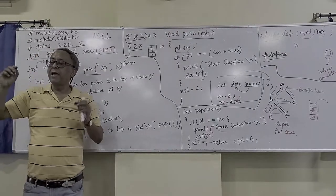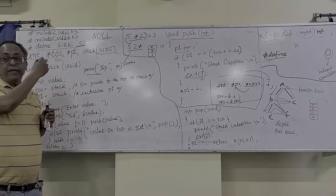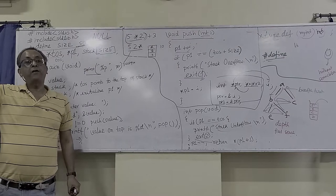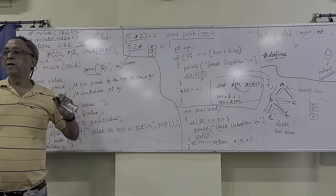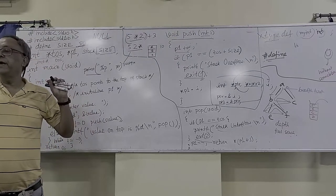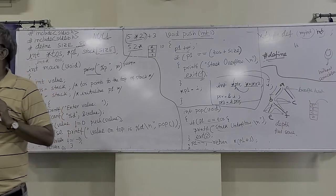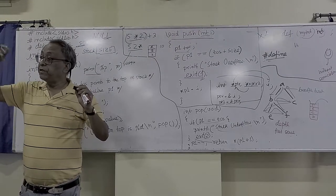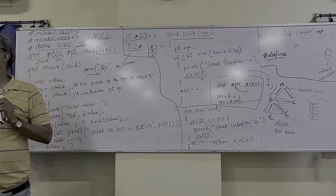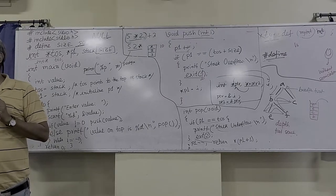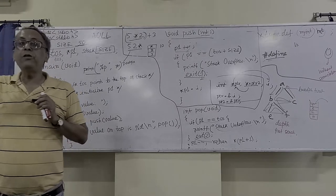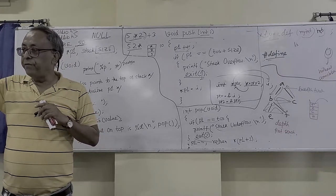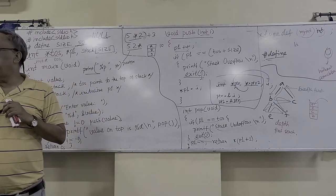There is also a static function — putting static in front of a function means that function can only be used by other functions within the same file. Static is a kind of partial-global concept. Regarding memory allocation: if a variable is declared within main or within a function, it is created in the stack. But if a variable is created outside main, that is a global variable — it is created in the global section of memory, increasing the size of the executable.